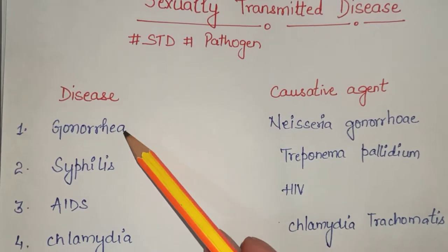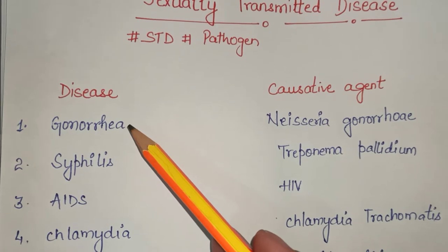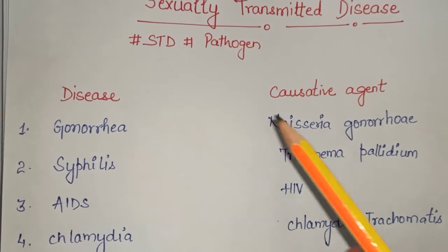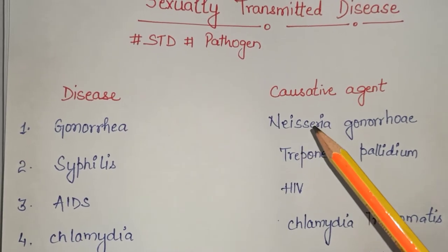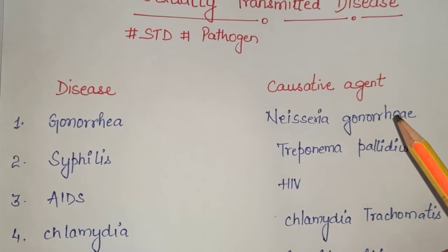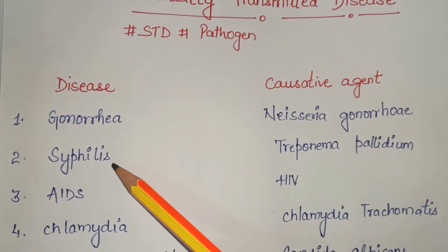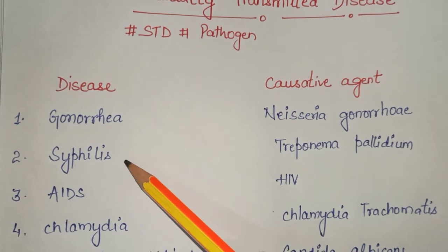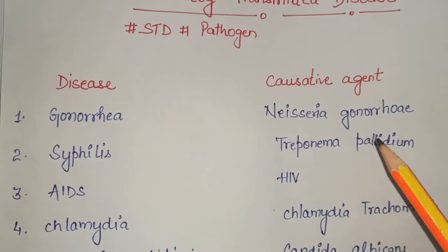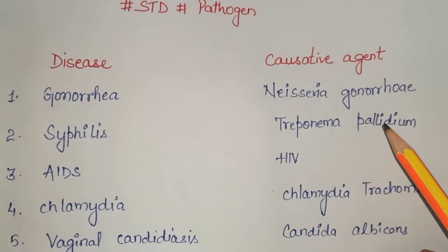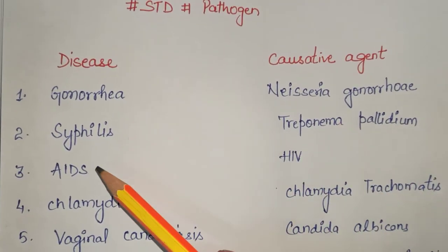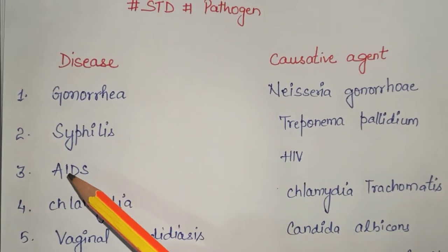The first is gonorrhea, which is caused by Neisseria gonorrhoeae. Syphilis is caused by Treponema pallidum. AIDS — that is acquired immunodeficiency syndrome — is caused by HIV, human immunodeficiency virus.